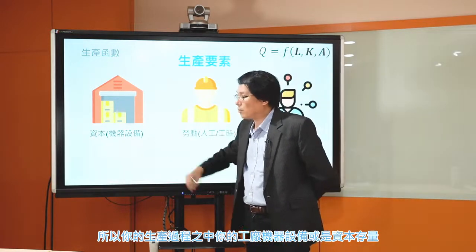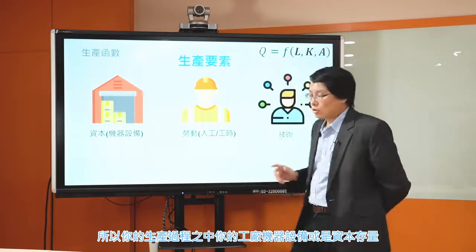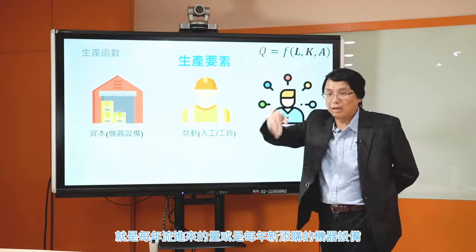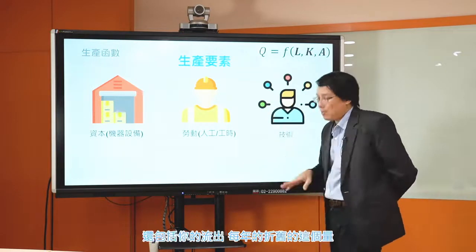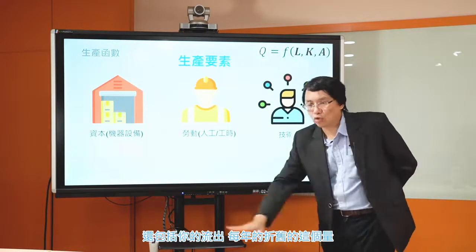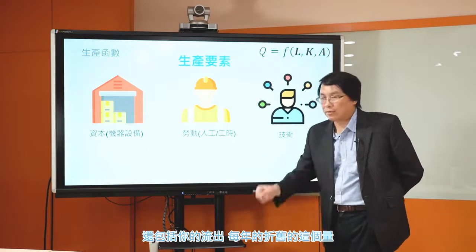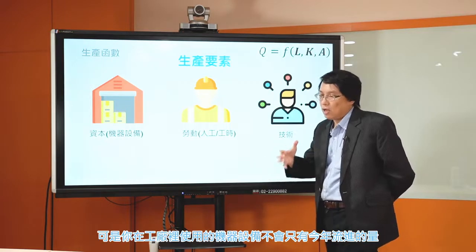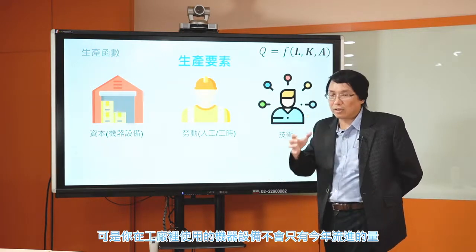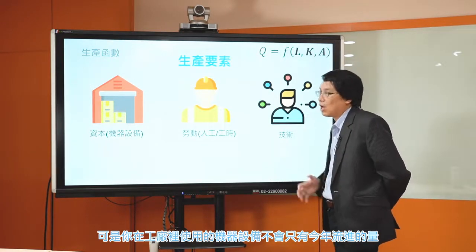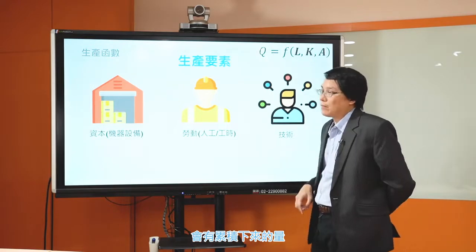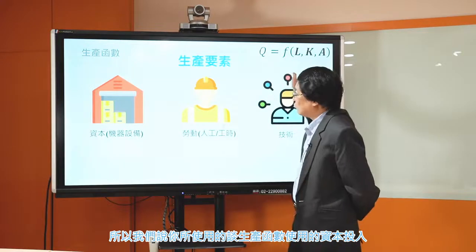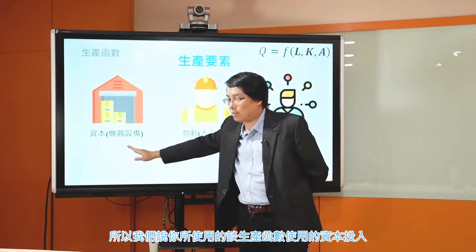你每年每年也都會折舊一些機器設備，每年會固定的去折舊。可能有個機器設備你用個十年就差不多，每年都有一些耗損或是它就是變舊了、過時了，十年以後就把它換掉了。所以你的資本存量取決於你的投資，投資就是每年流進來的量，每年新添購的機器設備，還包括每年折舊的流出量。